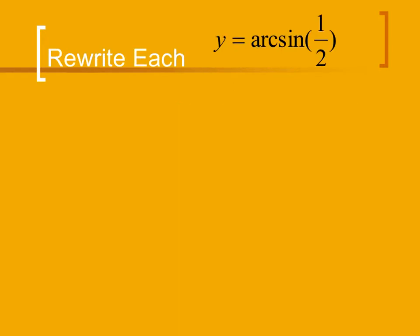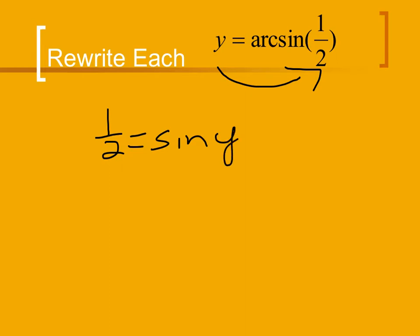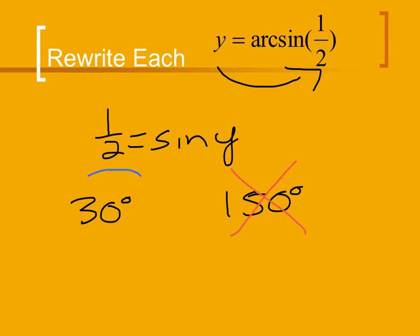We're going to evaluate the equation y equals arc sine of 1/2. Our first step when evaluating an inverse function is to get rid of the arc component. We're going to switch our variable and our value, losing that arc component. So I rewrite this as 1/2 is equal to the sine of y. We can then evaluate where sine equals 1/2 on a unit circle. That happens at 30 degrees and again at 150 degrees. For the arc sine, our answers can only be in the first or fourth quadrant. 30 degrees is in the first quadrant, 150 is in the second quadrant, so we reject 150 and accept 30 degrees as our answer.